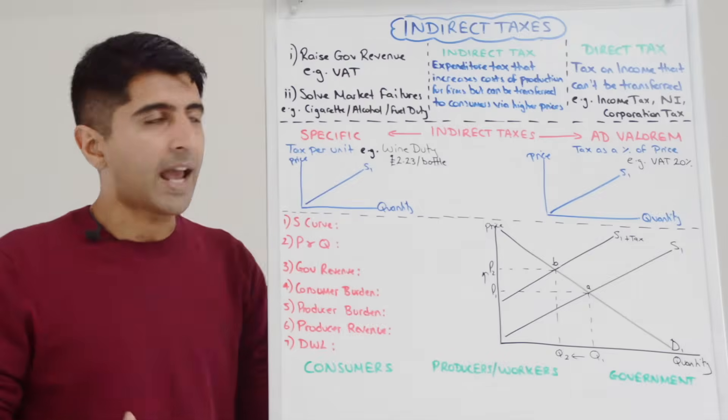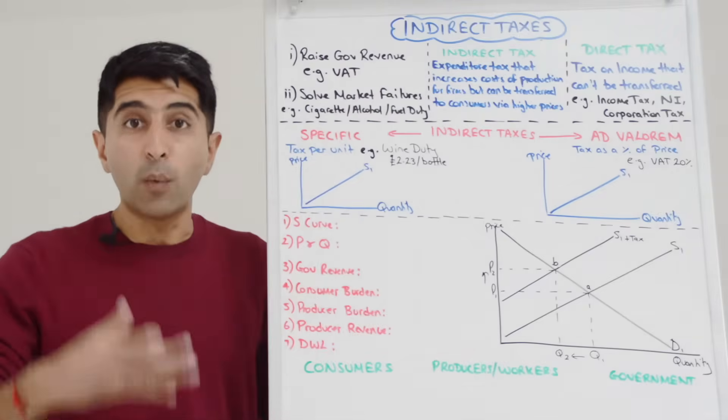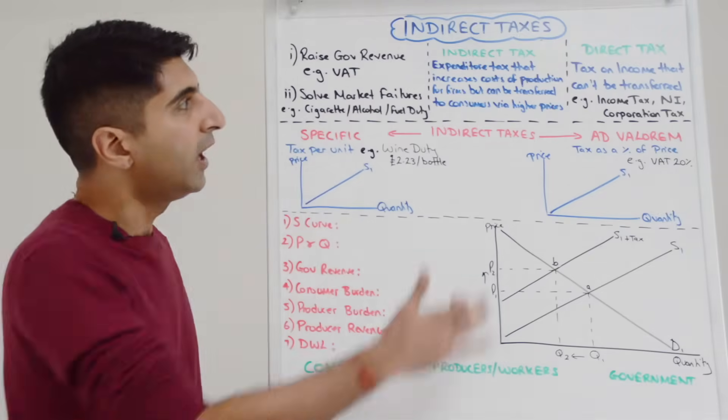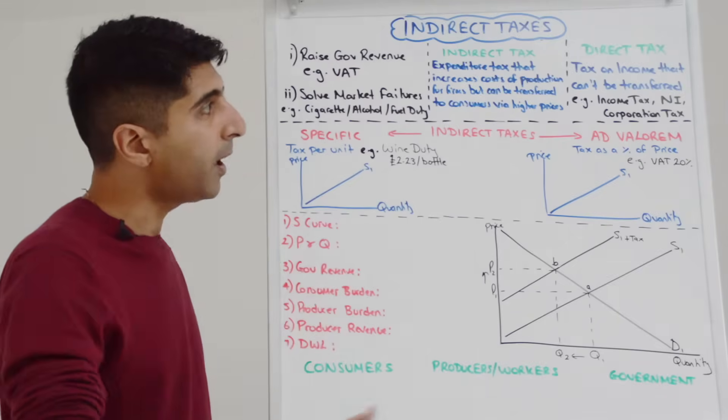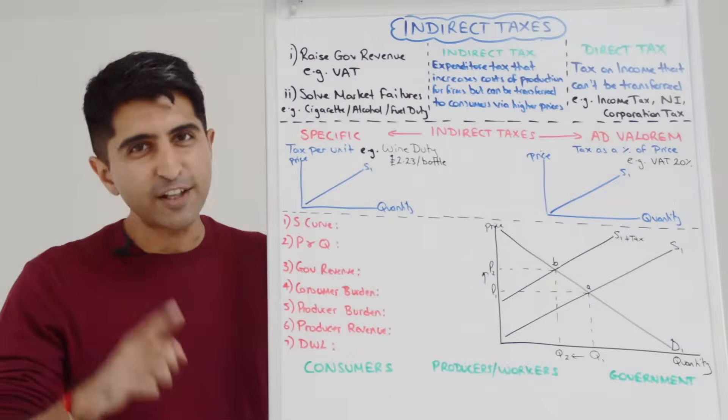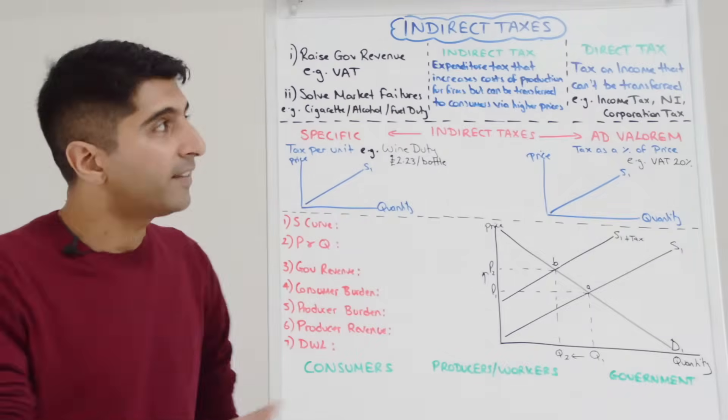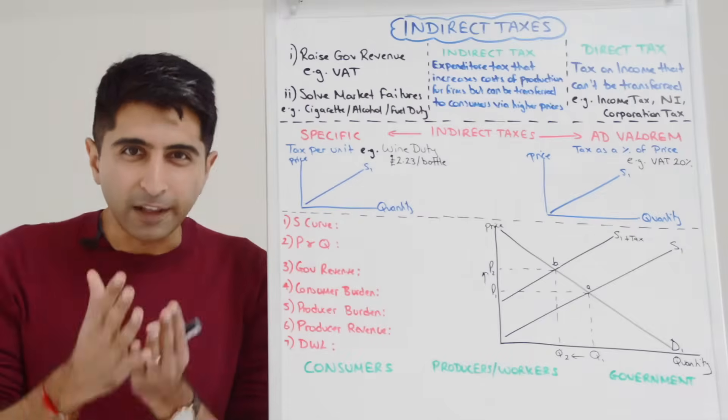They are expenditure taxes, that is an extra charge when goods and services are sold, that increase cost of production for firms, but they can be transferred to consumers via higher prices, hence they are indirect. Let's focus there.